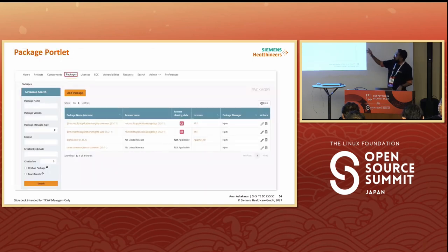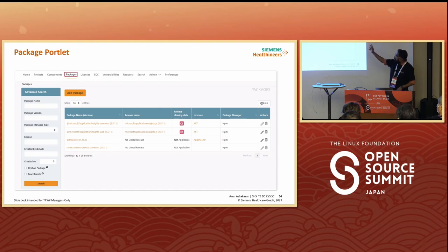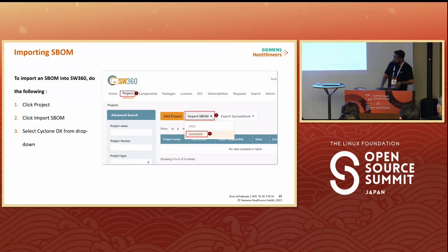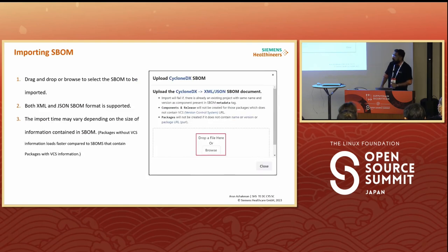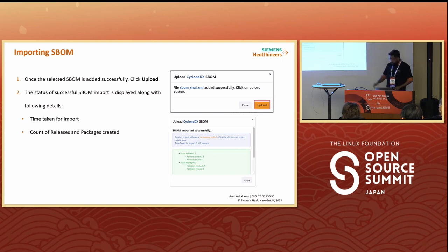This is the package portlet. You might not have seen this third portlet in the earlier demo. This is how it displays — it is a standalone portlet where you can search based on package manager type, the name of the package, and the release it is linked to based on the VCS URL and the licenses. All this information is collected from the imported SBOM. Now I will show a demo. This is where we can import an SBOM — select from the project, drag and drop the file, and once successful, you will see a status summary with the project name, releases created, packages created, what is reused, the time taken, and any error reports.